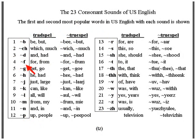The F sound uses the letter F, as in 'for' and 'from.' Often in USA English, 'for' is said as 'fer.' In British English, it's 'for.'